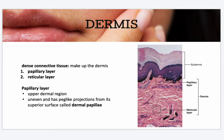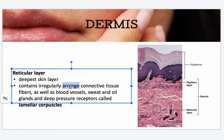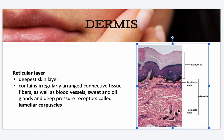Your dermis is made up of dense connective tissue and has two layers: the papillary layer and the reticular layer. Your papillary layer is the upper dermal region — it is uneven and has peg-like projections from its surface called the dermal papillae. Your reticular layer is the deepest skin layer and contains irregularly arranged connective tissue fibers, blood vessels, sweat and oil glands, and deep pressure receptors called lamellar corpuscles.